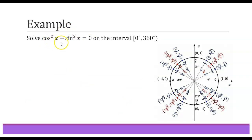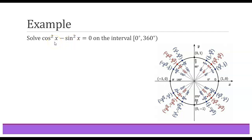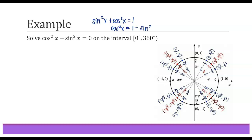In this example, solve cosine squared x minus sine squared x equals 0 on the interval from 0 degrees to 360 degrees. We have two different trig functions, and because they're different we can't factor anything out and can't subtract anything to the other side since we already have zero. We'll use a trig identity. Seeing sine squared and cosine squared, we think of the Pythagorean identity: sine squared x plus cosine squared x equals 1. Rearranging gives cosine squared x equals 1 minus sine squared x.